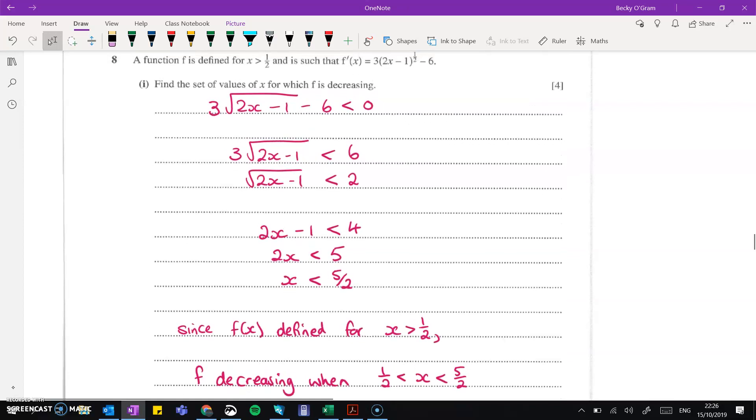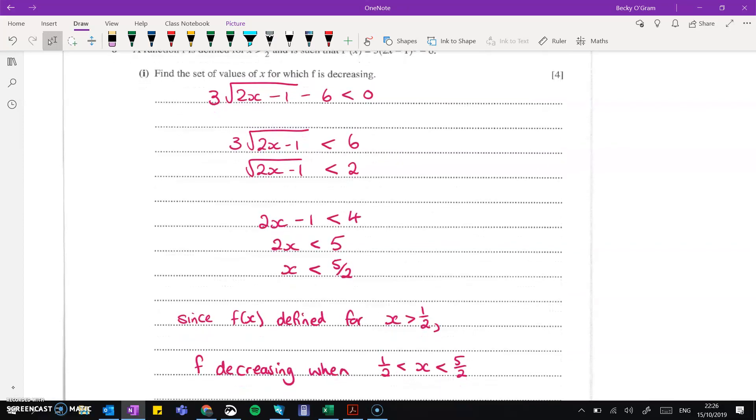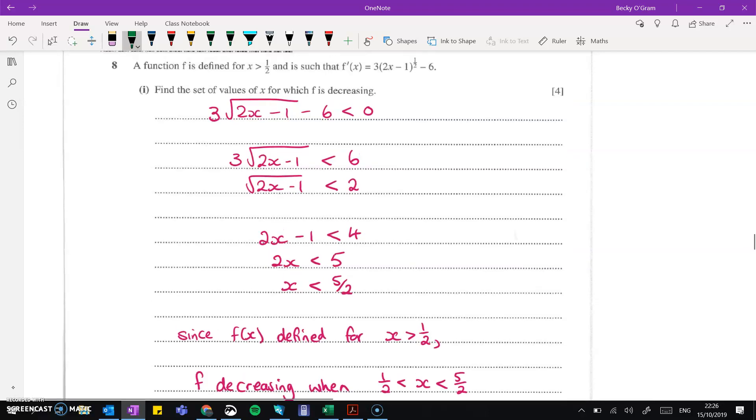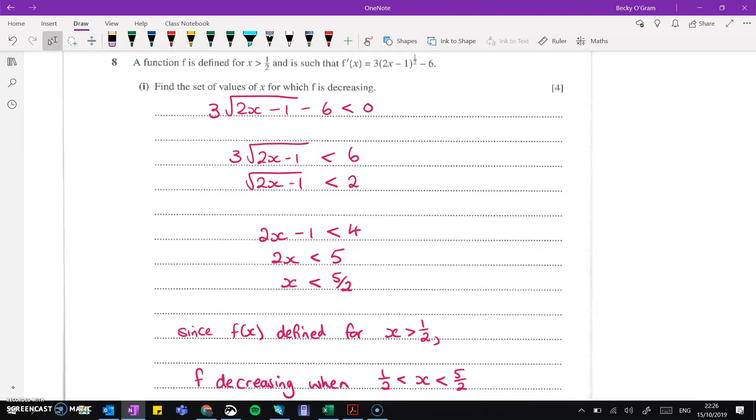Now, this last little bit, I'm not sure if it's going to actually be something that's worth something in the mark scheme. But since f of x is defined for x greater than half, we do have a limit on the bottom end of things. So f is decreasing when x is between half and 5 over 2. I would put it there just to be sure.